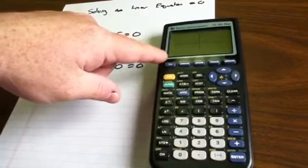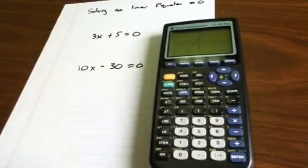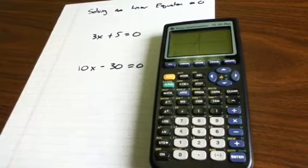The zero is going to be x equals some value and y equals zero. In this case, x equals -1.6666, which you would round to -1.7.